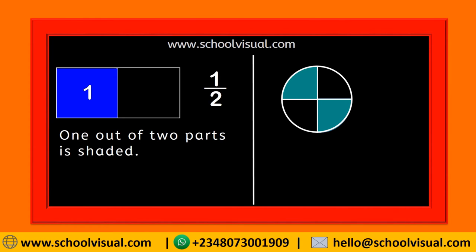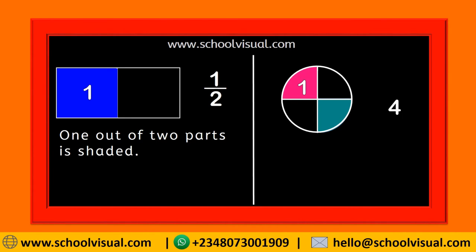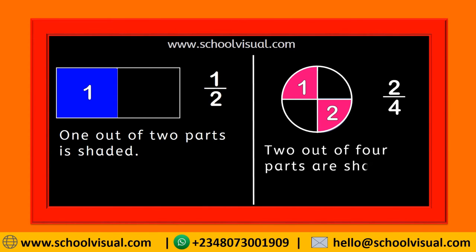How many parts do we have? One, two, three, four. I write down four because this shape is divided into four parts. How many parts are shaded? Let's count: one, two. So this becomes two over four — two out of four parts are shaded.